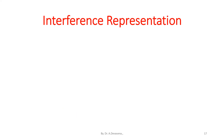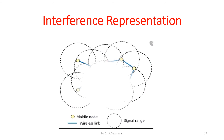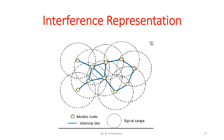The interference representation is shown here. We have mobile nodes; the dotted circle indicates the signal range, and the blue color line indicates the wireless links.